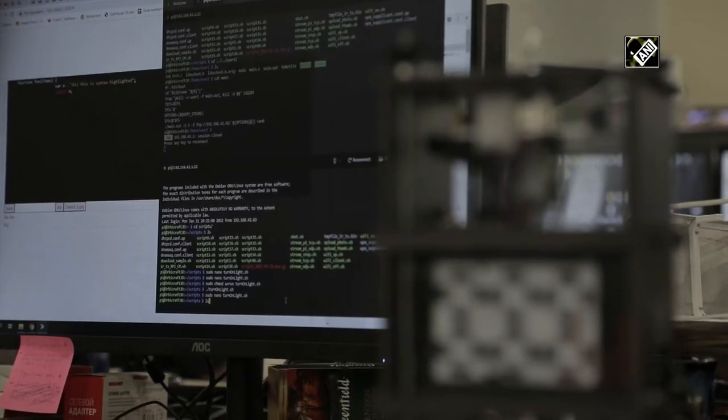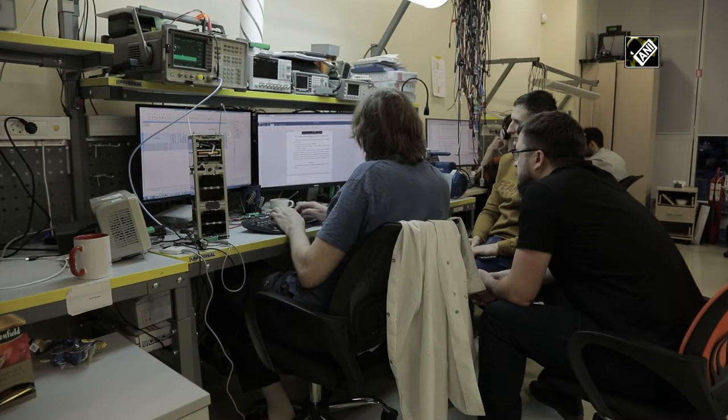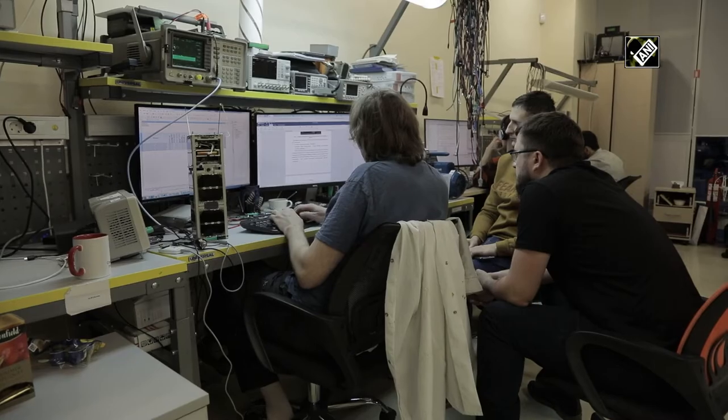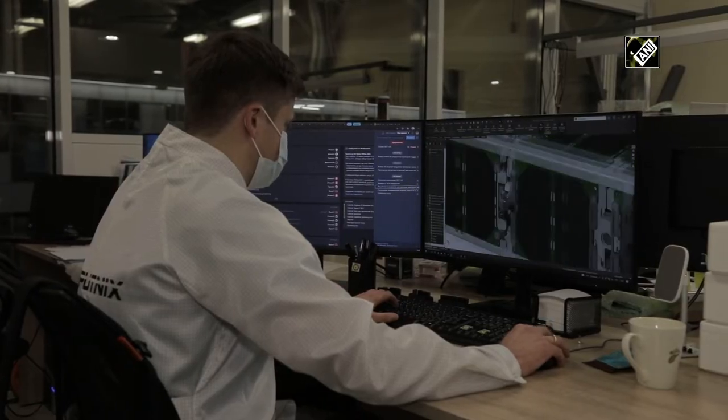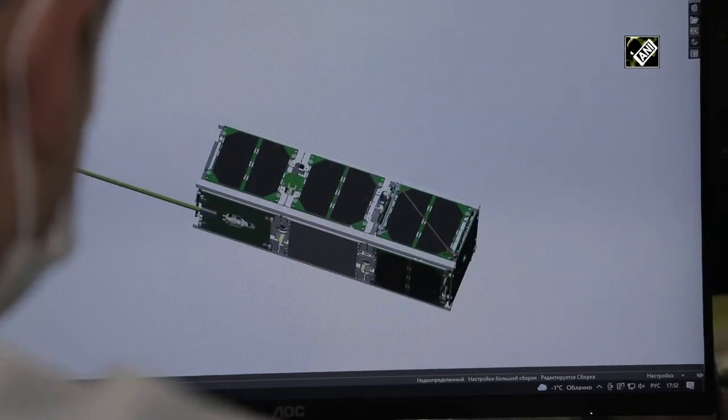The first Russian private production of nanosatellite is located at Skolkovo. These nanosatellites are manufactured according to CubeSat standard. It determines the dimensions necessary to connect the satellite to launch vehicle.